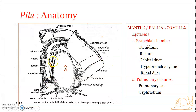The genital duct lies very close to the rectum on its left side, opening into the branchial cavity very close to the right nuchal lobe — similar to the rectum. In this female individual, the genital duct is the vagina. In the case of males, the penis (the copulatory organ) arises from the mantle edge in front of the genital opening.